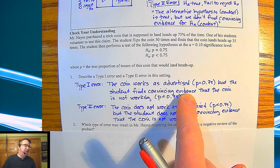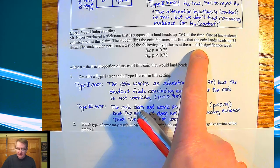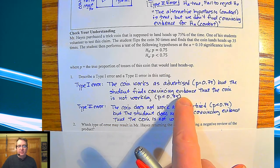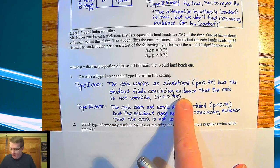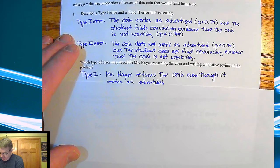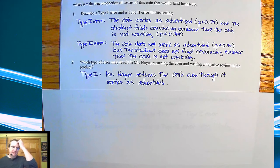So the coin is working, but I have evidence to say that it's not. It's just one of those things—hey, it happened, in our case, 9% of the time. So there we go. So Mr. Hayes returns the coin for a Type I error.